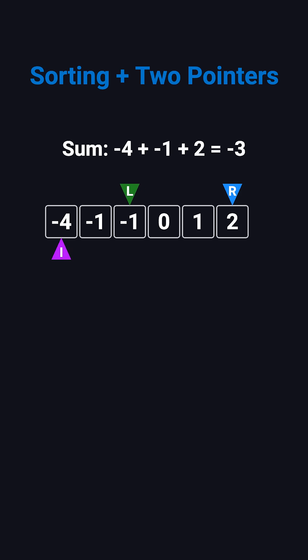Even when left moves to the next negative 1, then to 0, and then to 1, the sum is still less than 0. This tells us that no triplet starting with negative 4 can sum to 0, so we move on.